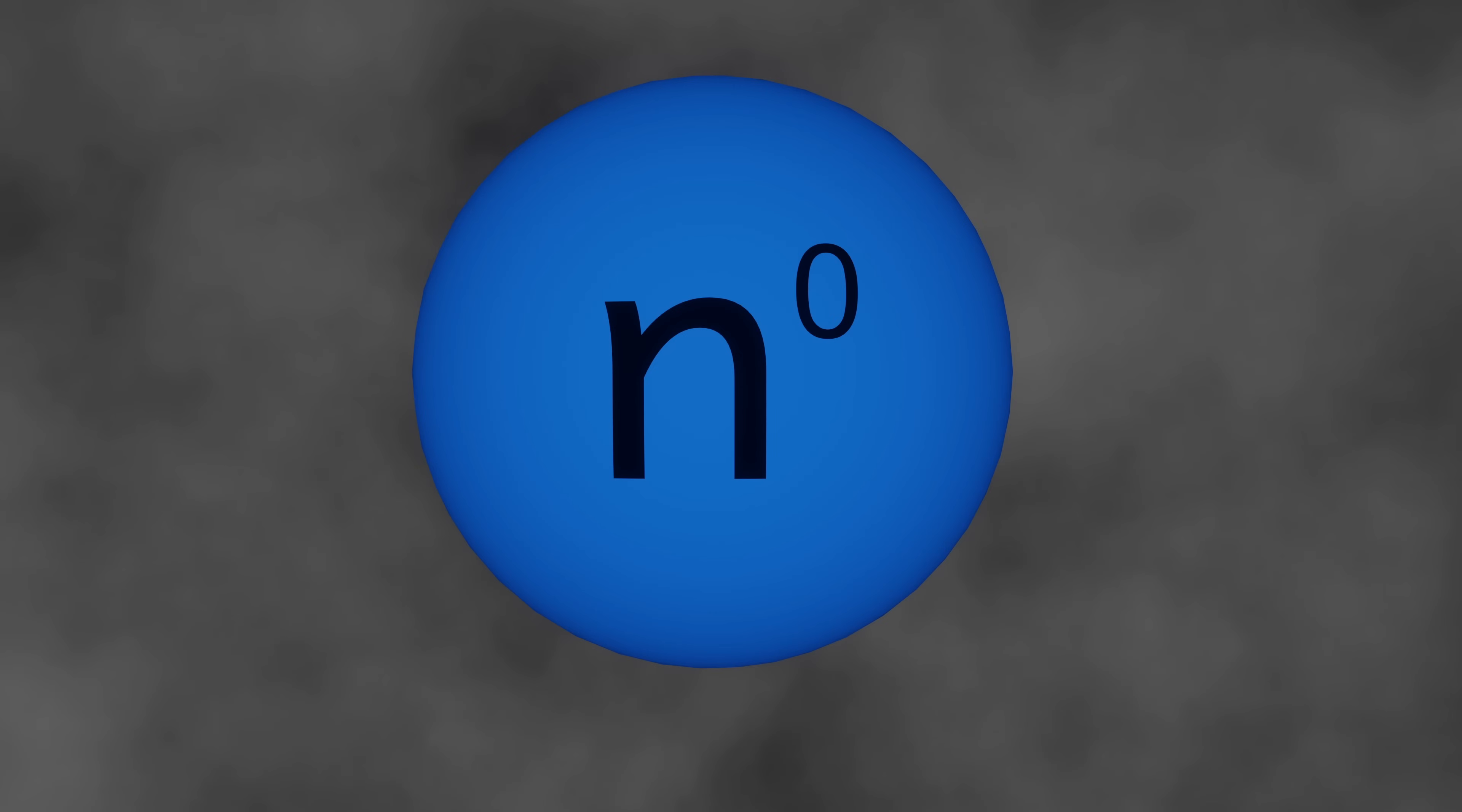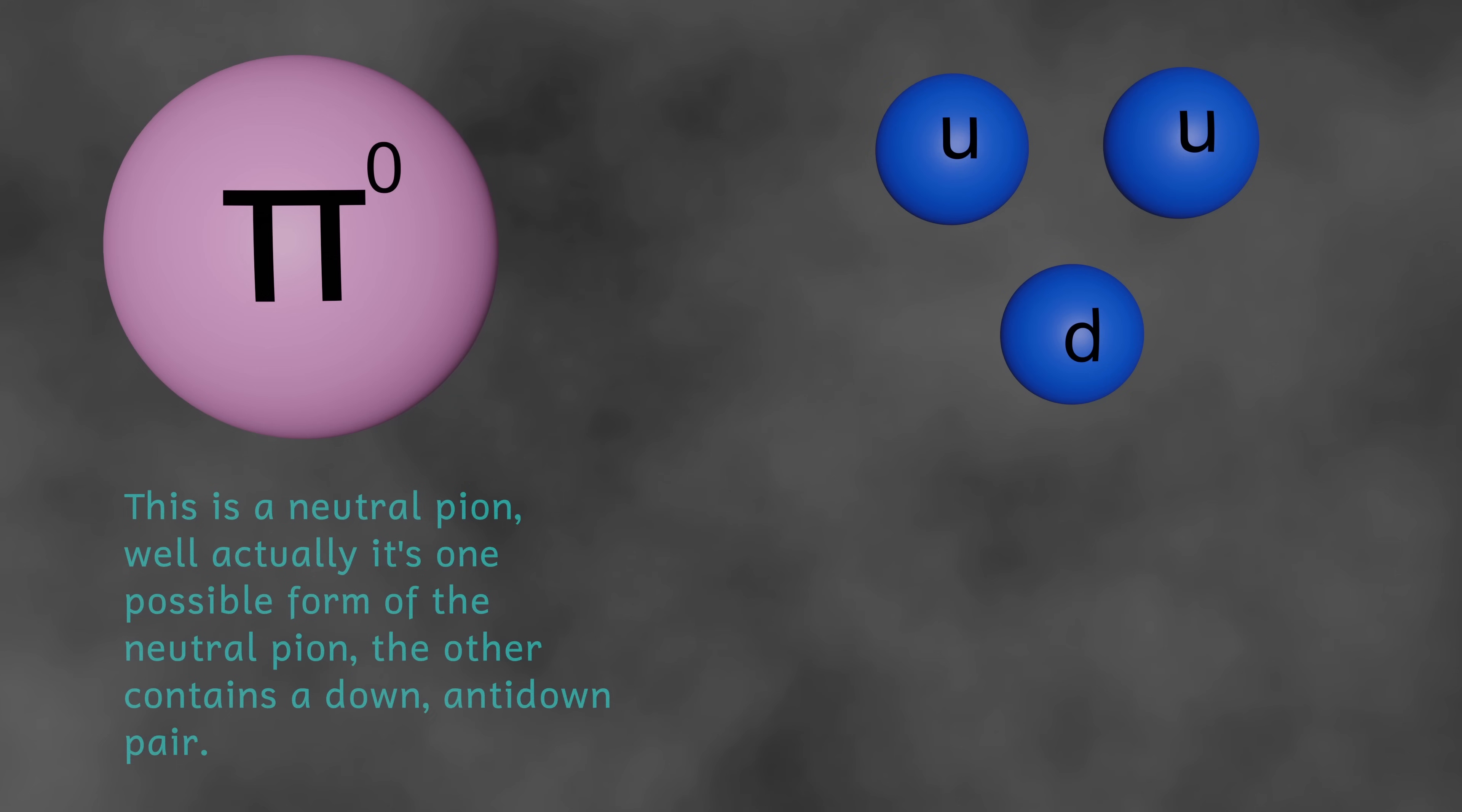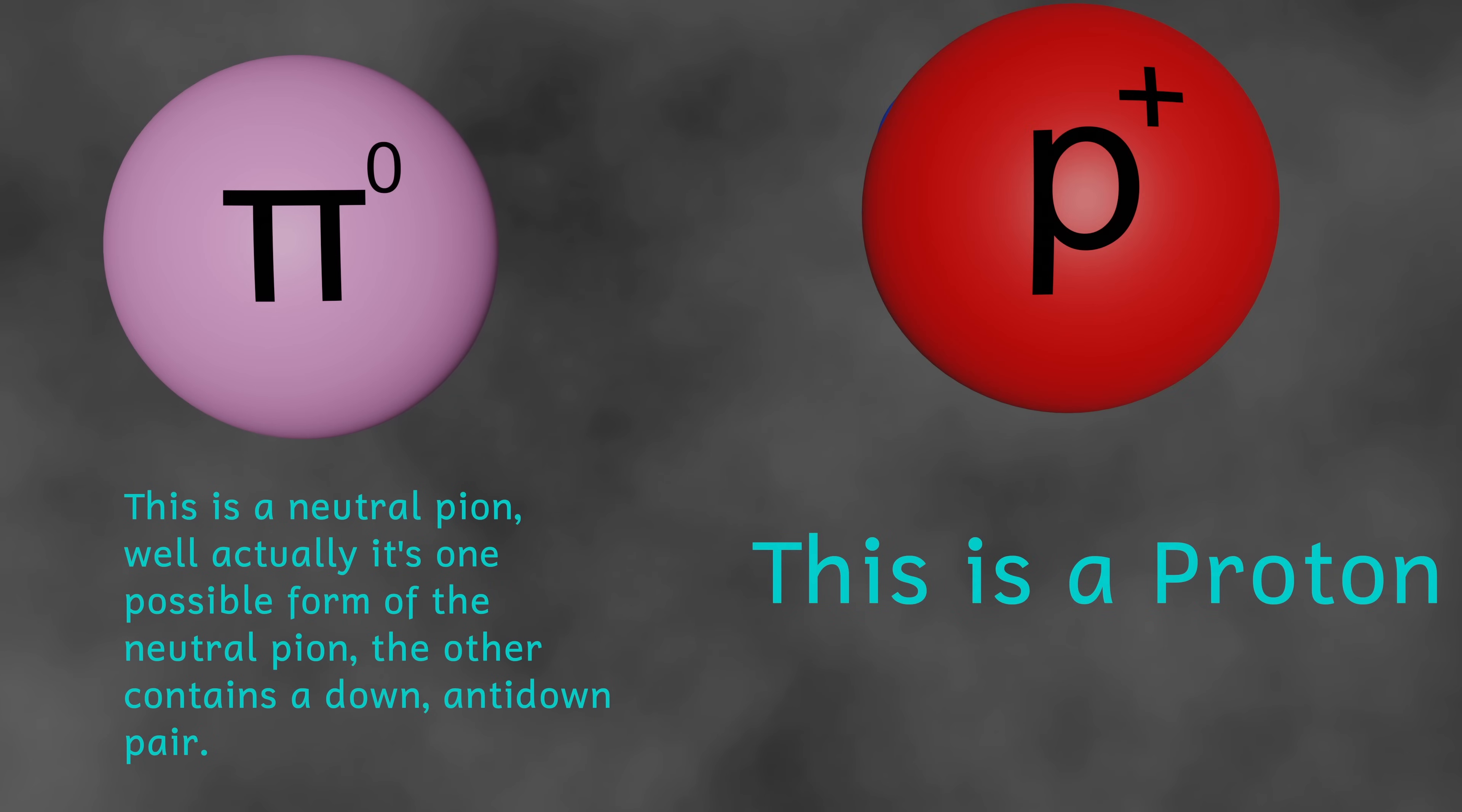However, it's the quarks' interaction with the strong force that allows them to join together to make larger particles, and ultimately, the particles that form much of the visible universe. When quarks join together to form larger particles, they mainly either join in twos or threes. Two quarks together form a meson, and three quarks make a baryon. And before we discuss how they do this, we now really need to talk about that color charge.